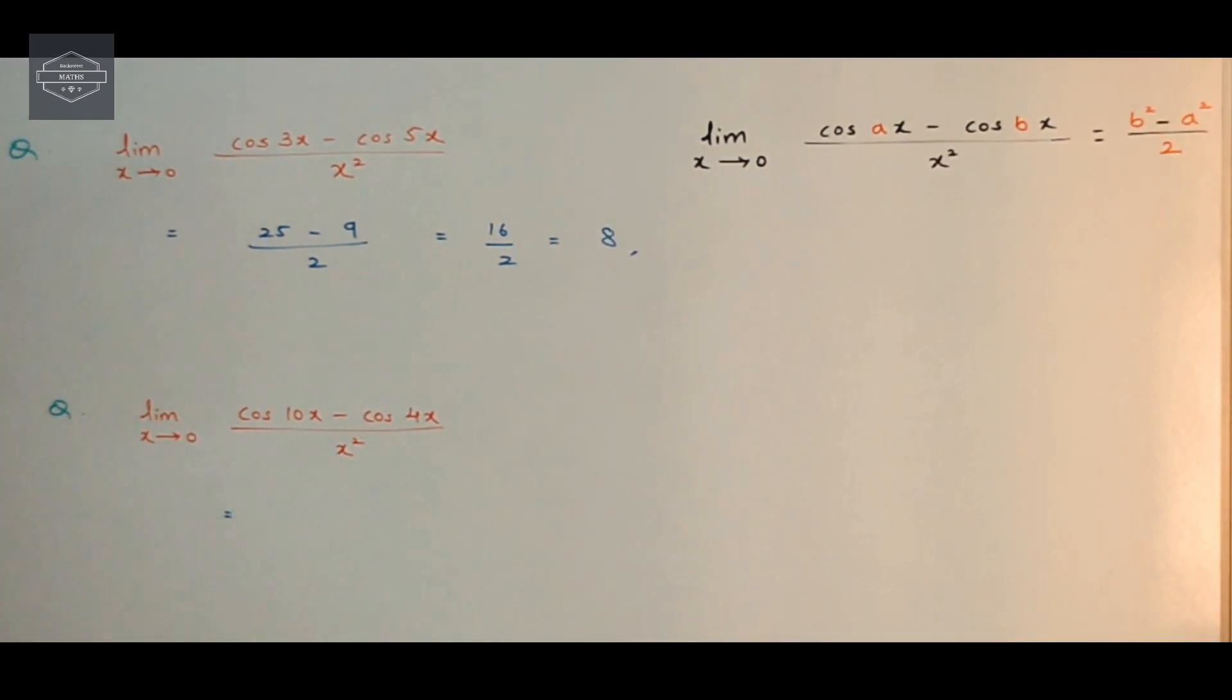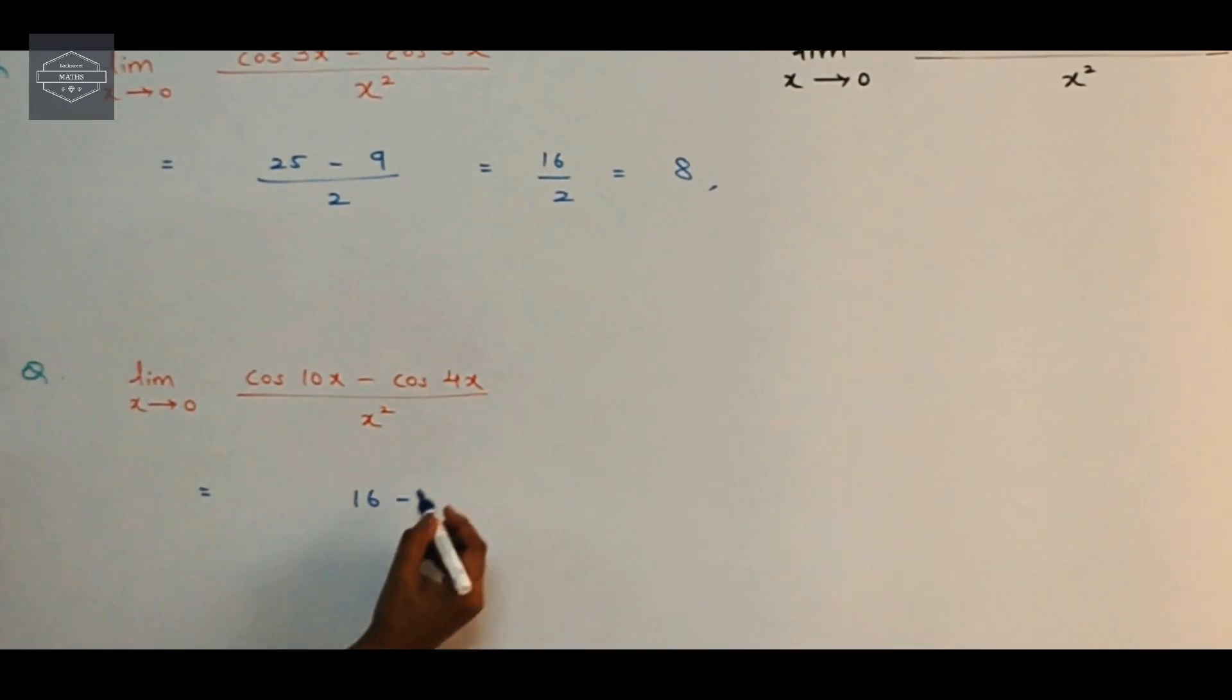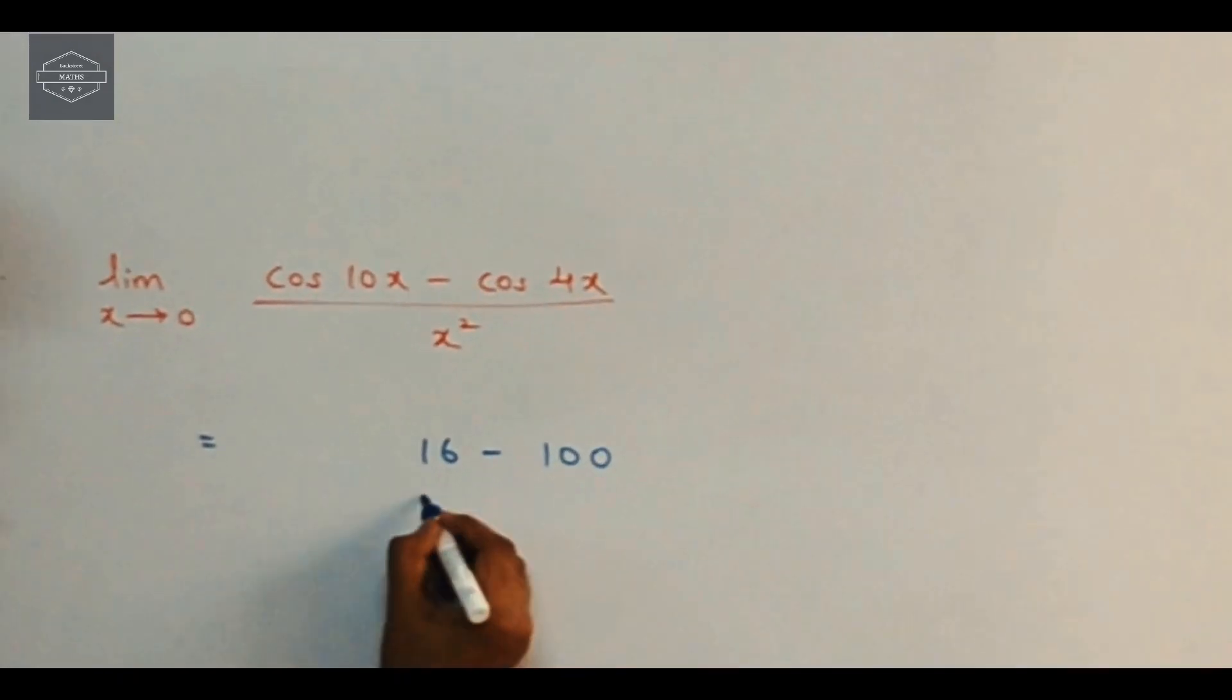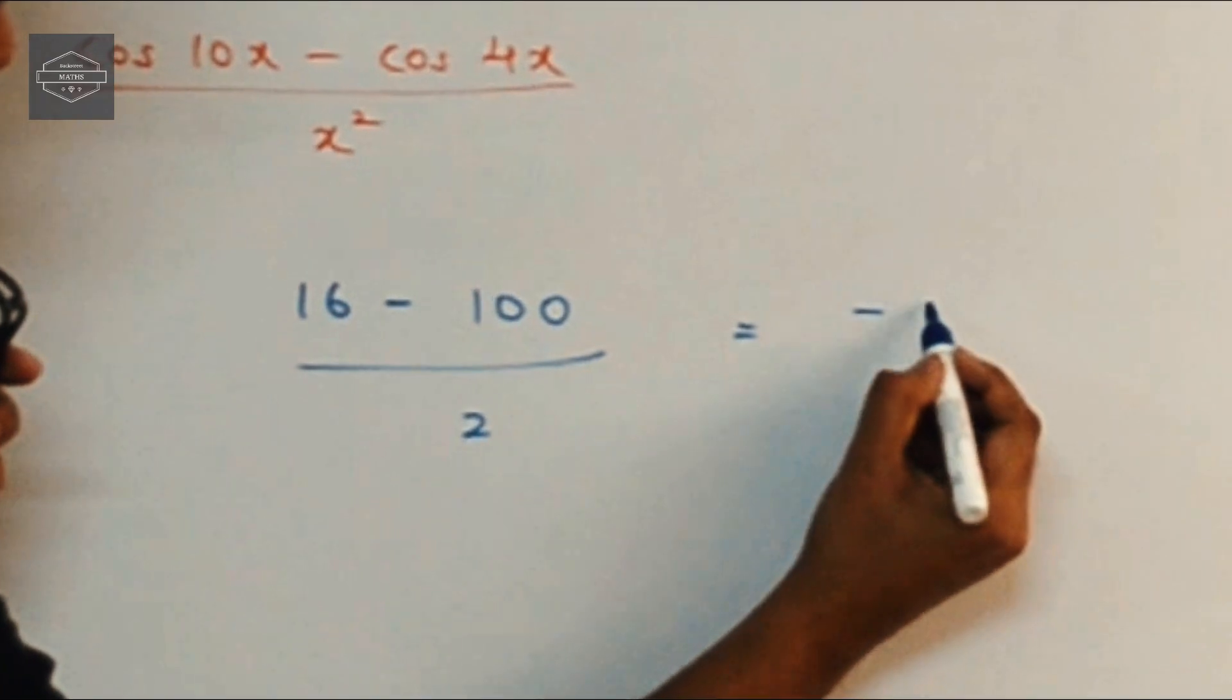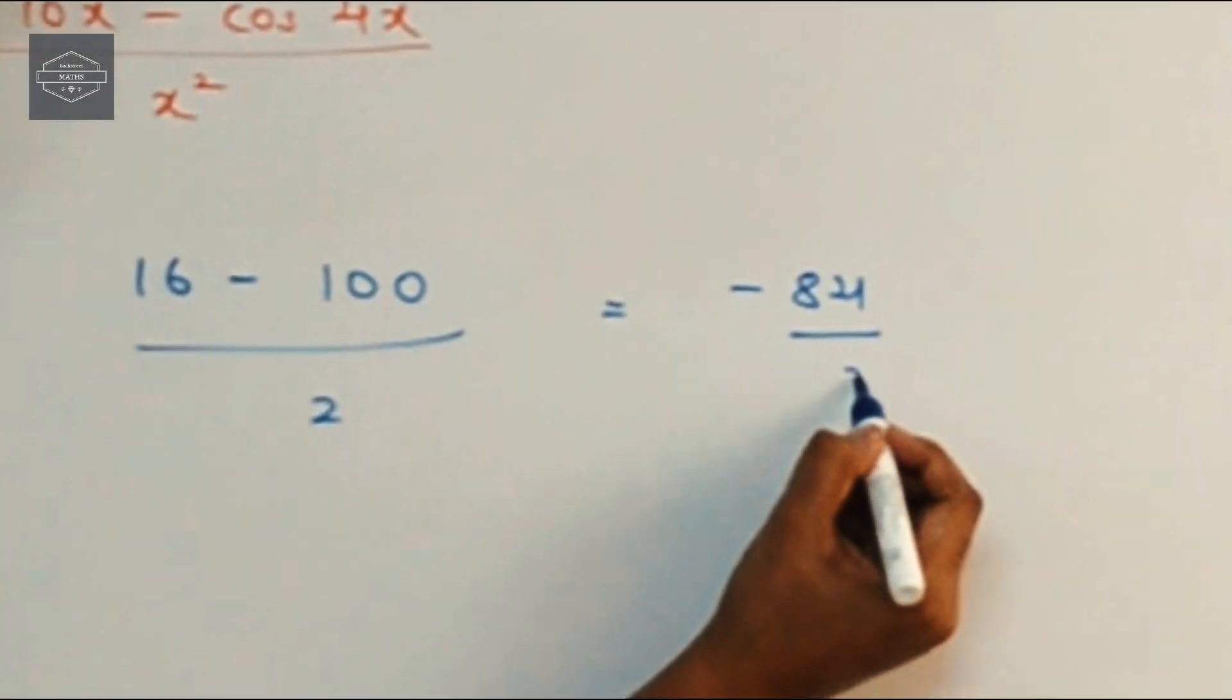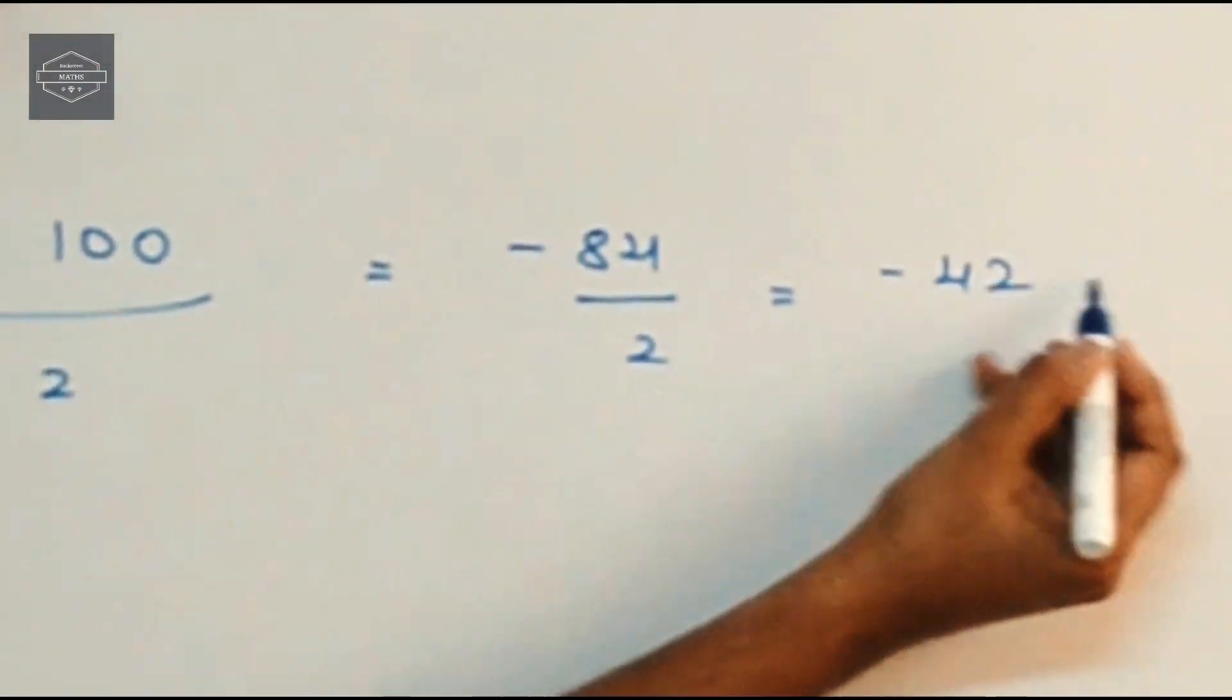Similarly here, it will be cos 10x minus cos 4x upon x squared. Toh yahan pe, b ka value is 4 and 4 squared is 16. Minus a ka value is 10 and 10 ka square is 100 upon 2. So this will be equal to 16 minus 100 is minus 84 upon 2 and that will give us minus 42.